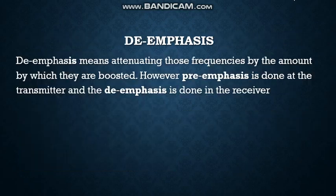Now de-emphasis. De-emphasis means attenuating those frequencies by the amount by which they are boosted. However, pre-emphasis is done at the transmitter and de-emphasis is done at the receiver. By the de-emphasis circuit, we decrease the amplitude by increasing the frequency. At the pre-emphasis circuit, we have already artificially boosted the signal, so we have to reduce the amplitude by the de-emphasis circuit at the receiver end.